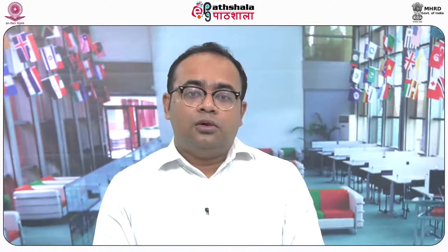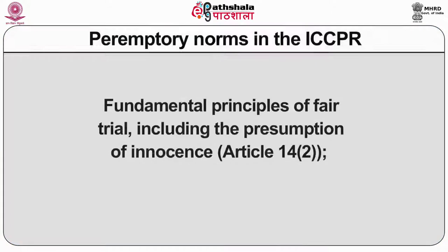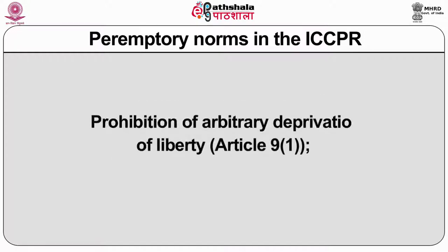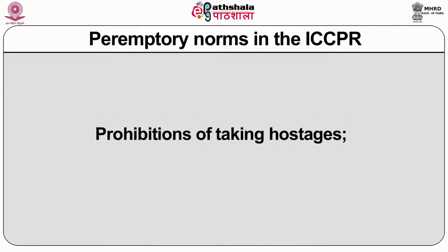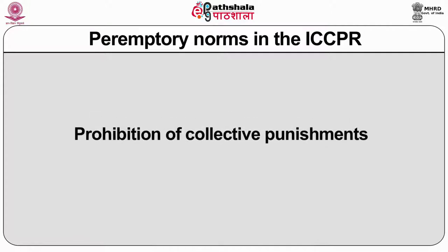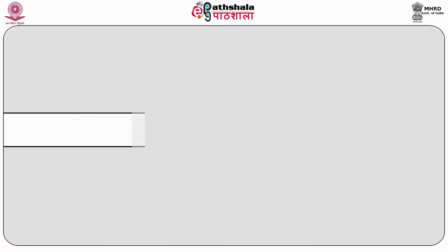While Article 4(2) enumerates some peremptory norms — for example, Articles 6 and 7 — there are additional peremptory norms which, though not specifically listed, cannot be derogated from: fundamental principles of fair trial including the presumption of innocence (Article 14(2)); prohibition of arbitrary deprivations of liberty (Article 9(1)); prohibitions of taking hostages; and prohibitions of collective punishments.